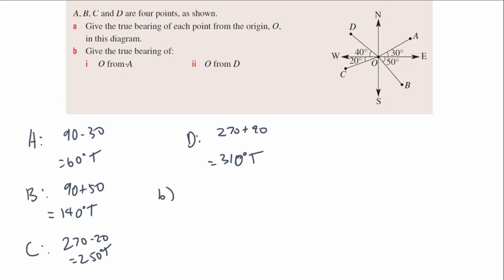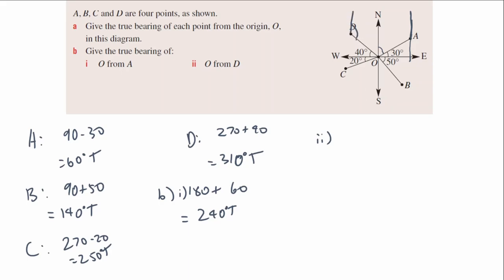For question B, the bearing of O from A: I draw the north line from A. I know south is 180, so it's 180 plus 60 — the 60 we found before — giving 240 degrees true. For O from D: we found the bearing of D from origin was 310, so there are 50 degrees left to 360. That means 50 plus something equals 180, so the bearing is 180 minus 50 equals 130 degrees true.